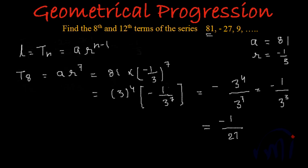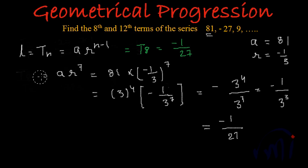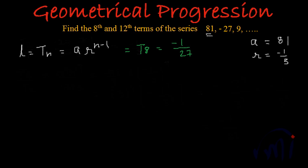So what we have got? We have got our T8, the 8th term, and it is minus 1 by 27. Now let's find our 12th term. T12 will be A multiplied by R to the power n minus 1, and n is 12 here, so it will be R to the power 11. Let's substitute the value of A as 81 and R as minus 1 by 3.